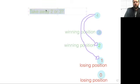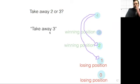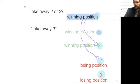So I have one vote for take away three. So if we take away three, it will make the next player be in a losing position. So is four a winning position or a losing position? Four is a winning position because I can put my opponent on a losing position.